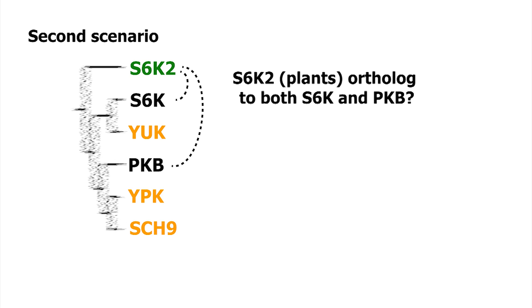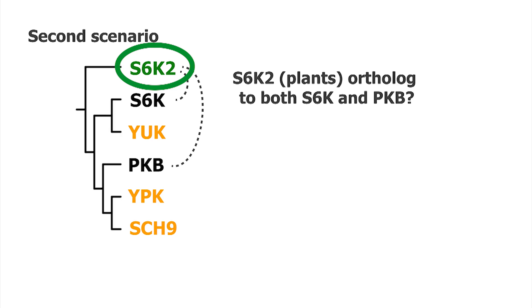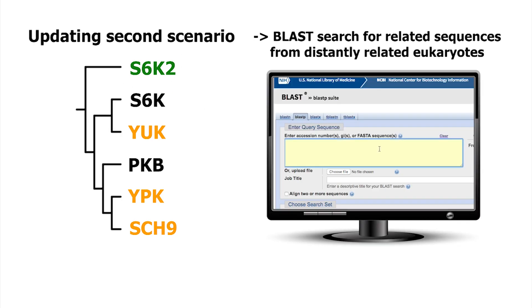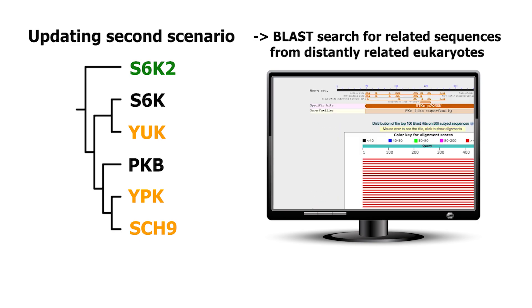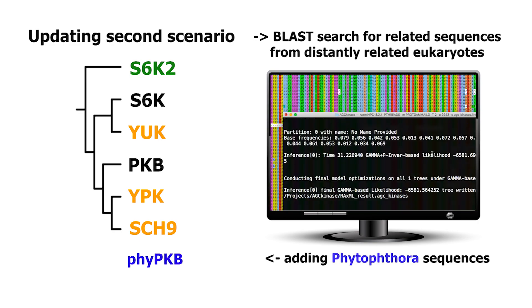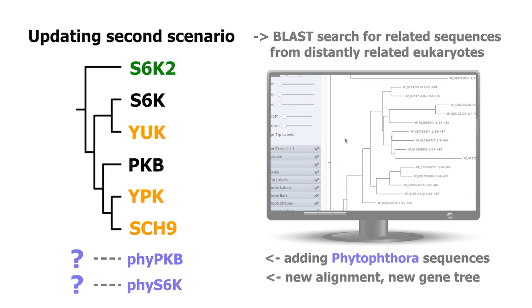But we are not entirely sure of the tree, particularly for the plants. So how can we become more certain about the position of this plant protein? We should add a couple more sequences from other distantly related eukaryotes and make a new alignment and build another tree.